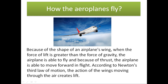Our today's question is: how does an airplane fly? You can answer like this — because of the shape of airplane wings, when the force of lift is greater than the force of gravity, the airplane is able to fly. Because of thrust, the airplane is able to move forward in flight. According to Newton's third law of motion, the action of wings moving through the air creates lift.